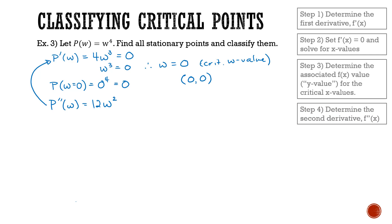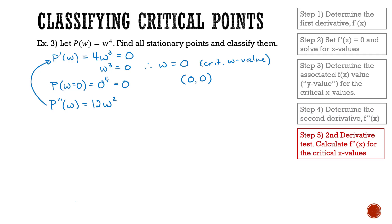I'm ready for step 5: the second derivative test. This means determining the value of the second derivative when w is equal to 0, at the critical w value. So I substitute into p''(w) at w = 0, and I get 12 times 0 squared, which gives me 0.